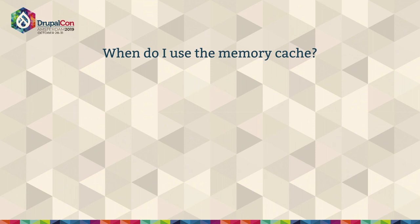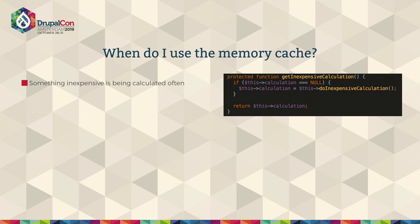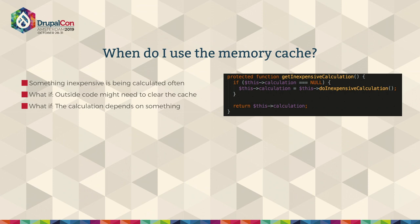So when do you use it? If something inexpensive is being calculated often, core has already solved this problem with a pattern. We set a property on a service — if it's null, then we try to calculate it; if we have it, we start returning it from that point on. But there's a problem: what if outside code needs to clear this cache? Or what if the calculation depends on something and you want to add cache tags? A static property doesn't really do much. So you end up seeing a lot of classes using this pattern defining a clear cache method, a reset cache, or reset index. It's littered all over core, and this really sucks because then any instance that might need to clear that cache needs to manually think of that.